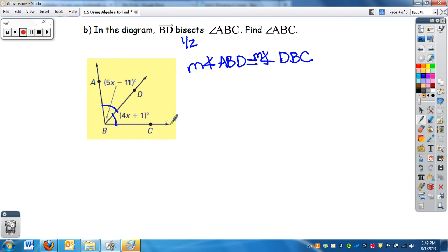For us to find ABC, we need to know what each one is. We need to figure out the value of X. So I can set 5X minus 11, replacing ABD, equal to 4X plus 1.